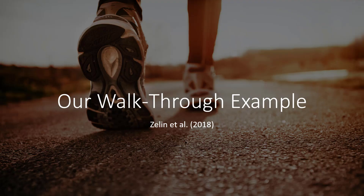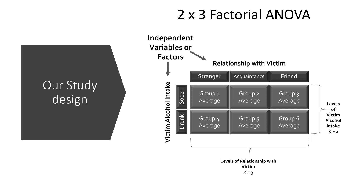For our JASP walkthrough, we'll be analyzing data published by Alexandra Zalen, myself, and Don Johnson in 2018. We conducted a series of studies to determine if people evaluated victims of sexual harassment in a public location — in this case, a bar — differently depending on different factors. Past researchers found that people are more likely to help a friend compared to a stranger when sexually harassed. We wanted to learn more about a more ambiguous category: an acquaintance — someone from class, a neighbor, or a friend of a friend.